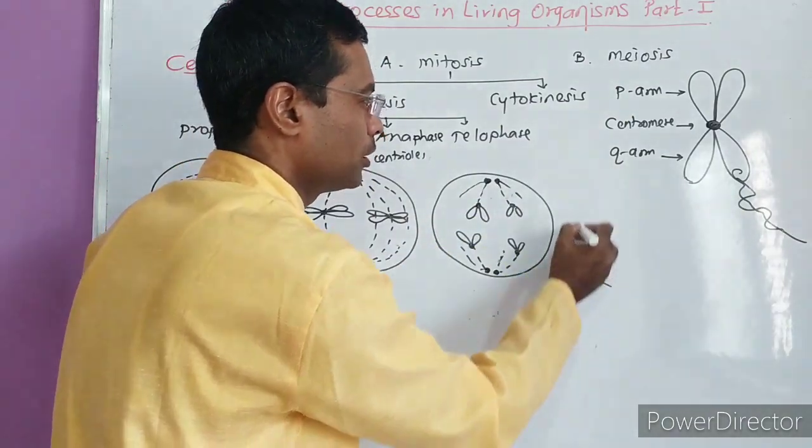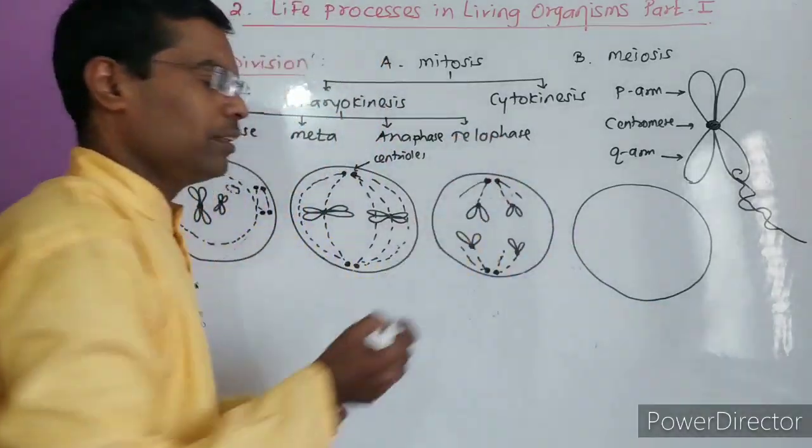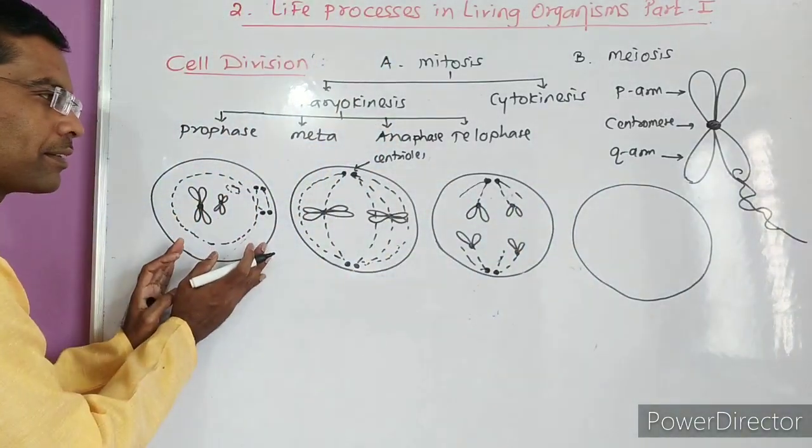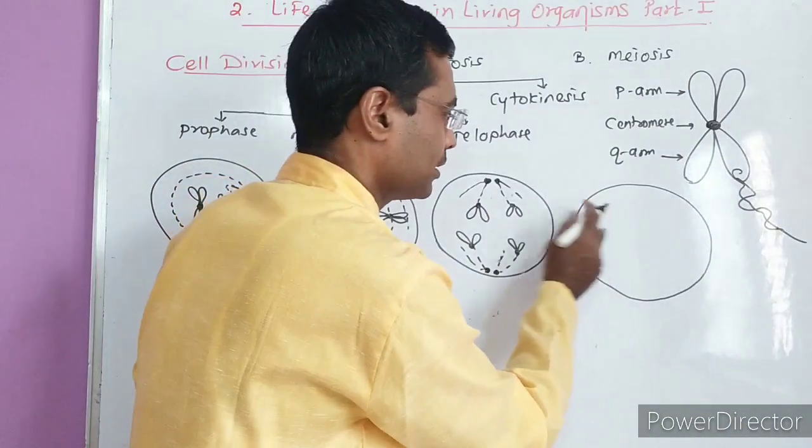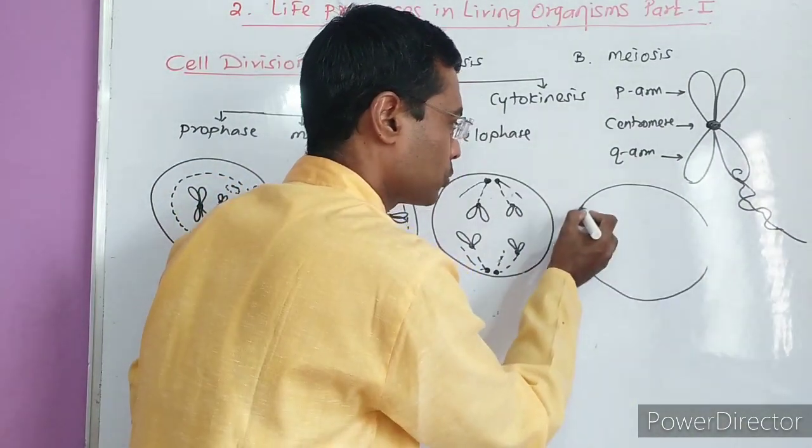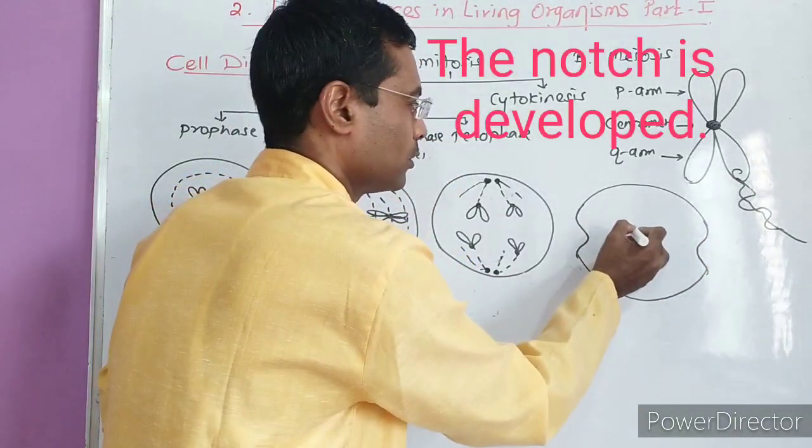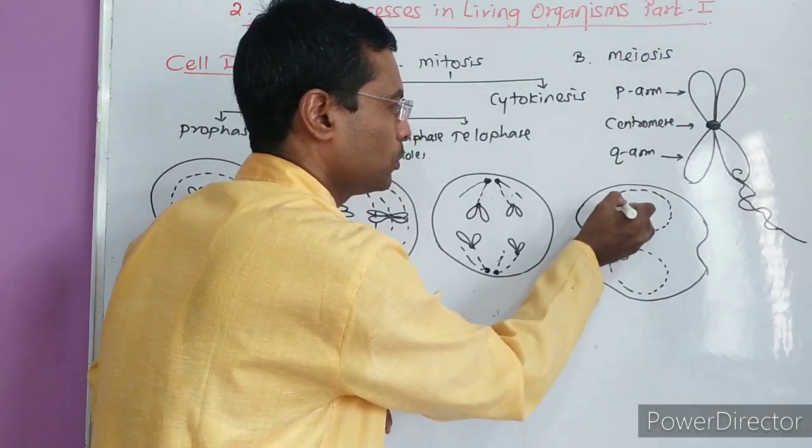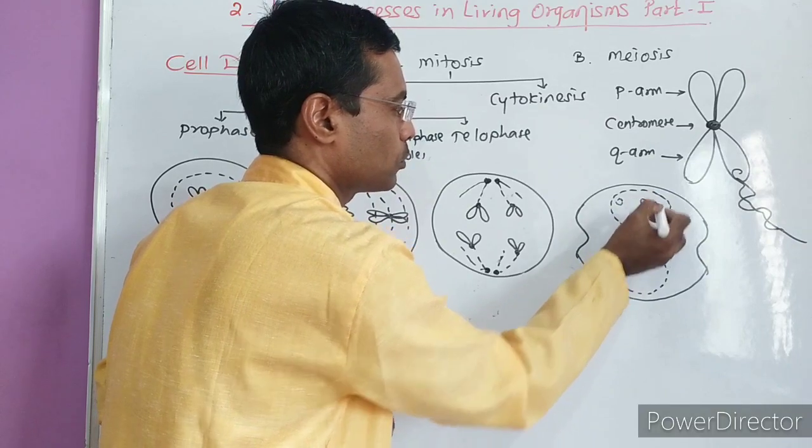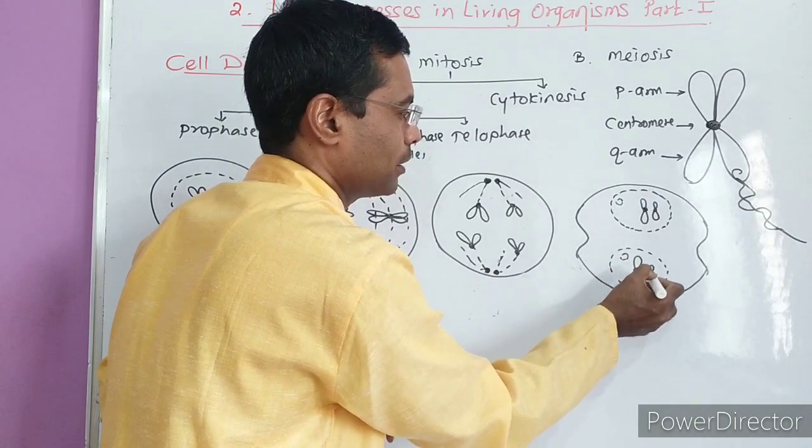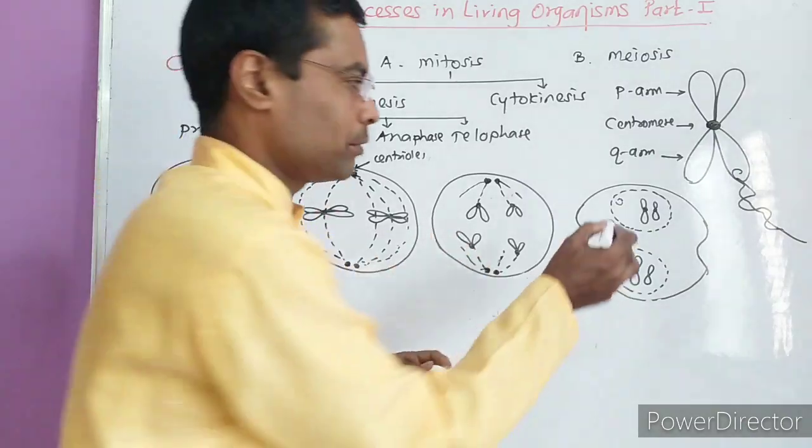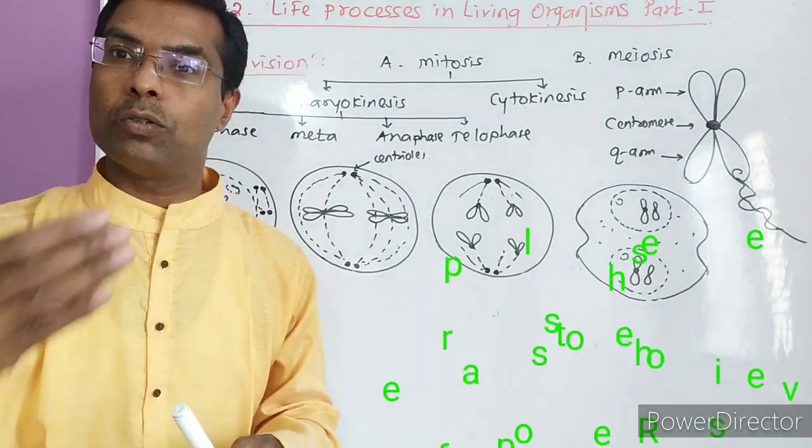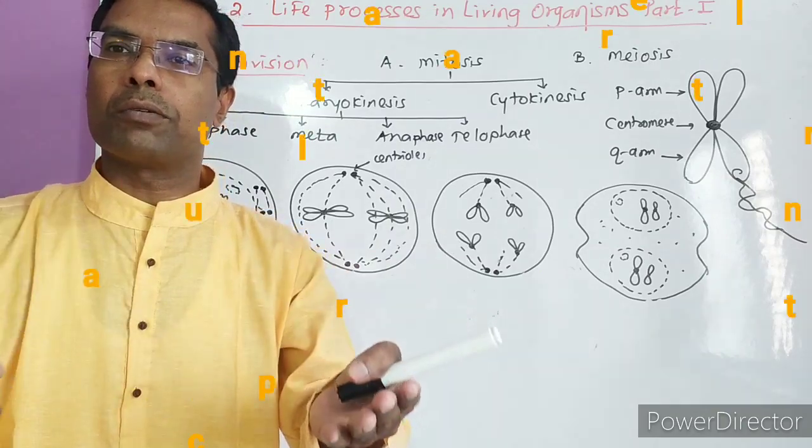Now see telophase. What happens? In telophase, see that here - this is exactly the reverse of prophase. A notch, a groove, starts to form here. Two nuclei are formed. The two nuclear membranes, two nucleoli. And see the chromosomes - the chromosomes are separating in this way.